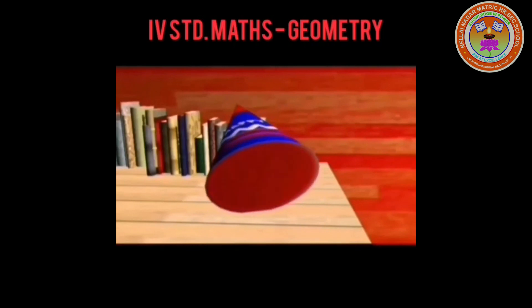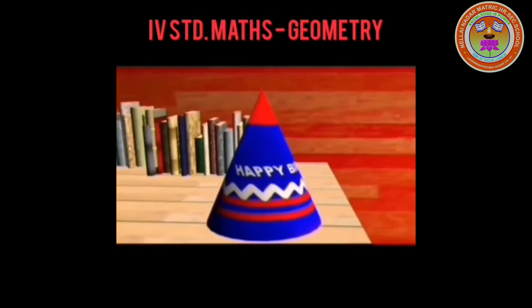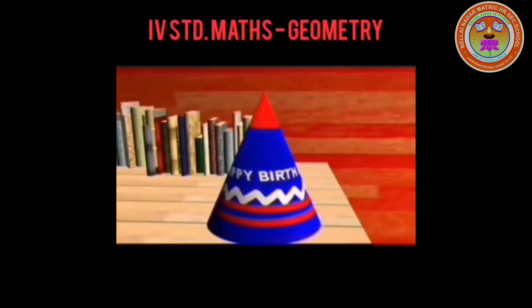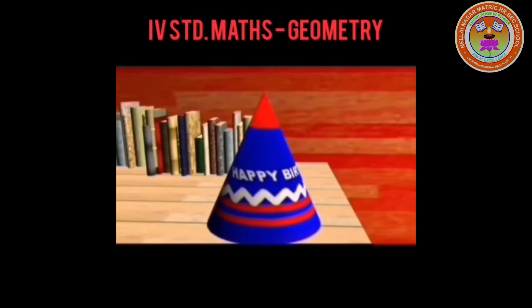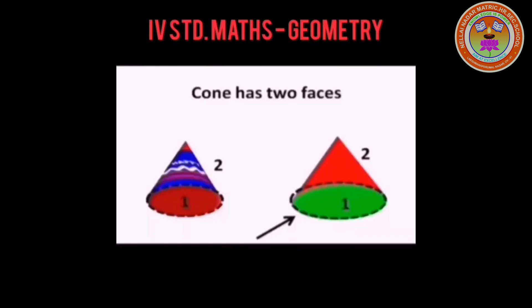If you look at the birthday hat from the bottom, it looks like a circle. The shape of a birthday hat is called a cone, like an ice cream cone. It has 2 faces and 1 edge where these 2 faces meet.